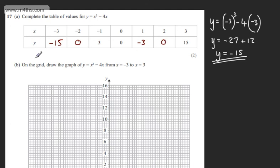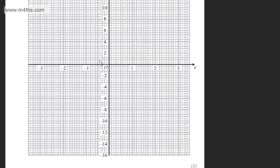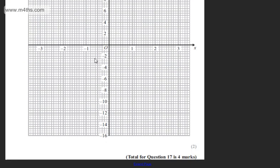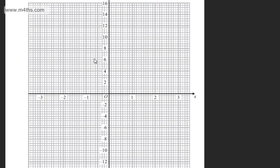And that's done for two marks. It says in part B, on the grid draw the graph of y equals x cubed minus 4x from x equals minus 3 to x equals positive 3. The question carries two marks. So let's go ahead and do that.